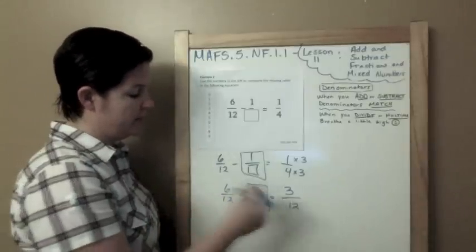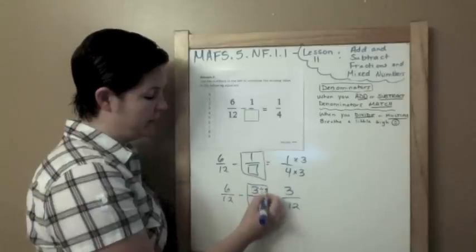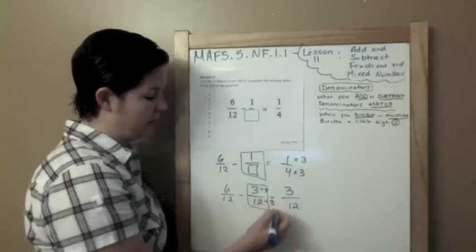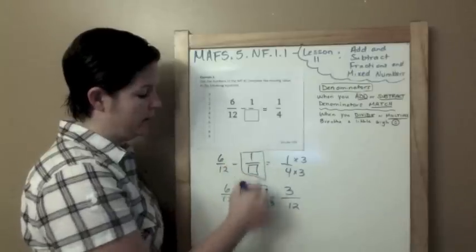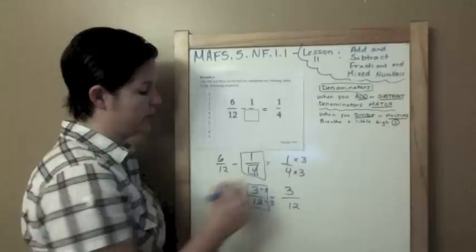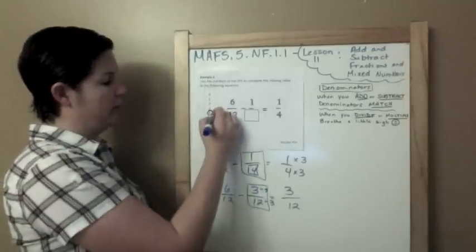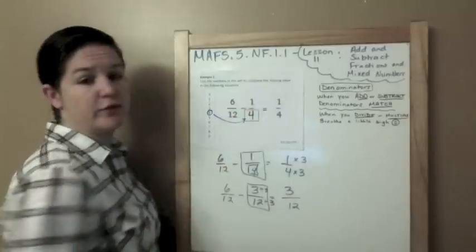So six twelfths minus what equals three twelfths? Well, six twelfths minus three equals three. Six minus three is three. And my denominators just go across. So this, these two need to have, this is my equivalent fraction for what is up here. So three twelfths, if I were to divide by three and divide by three, I would get one. Twelve divided by three is four. So one fourth, that would go here. Four goes in. All right.